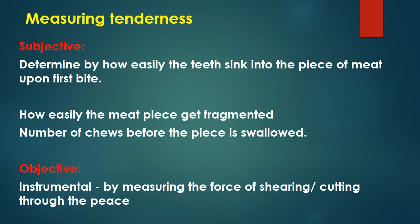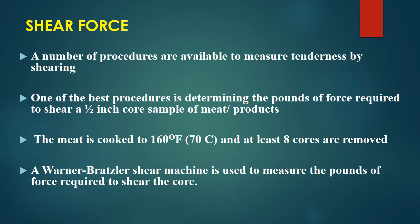Objective measurement is done with instruments. By measuring the force of shearing or cutting through a piece of specific size — a specific size piece is sheared or cut with a mechanical device and the force required is measured. If more force is required, the meat is tough; if less force is required, the meat is tender. This is how the tenderness of meat is objectively measured.